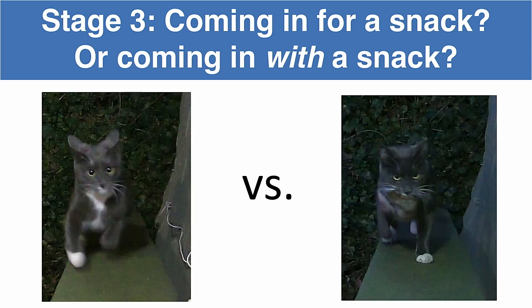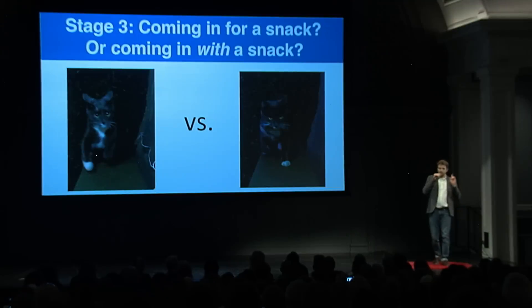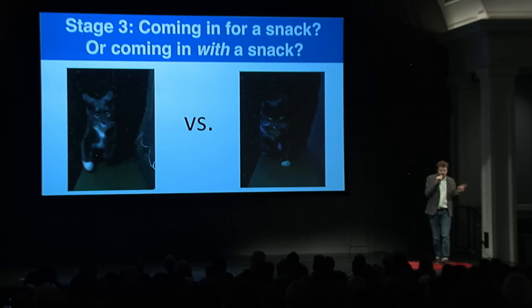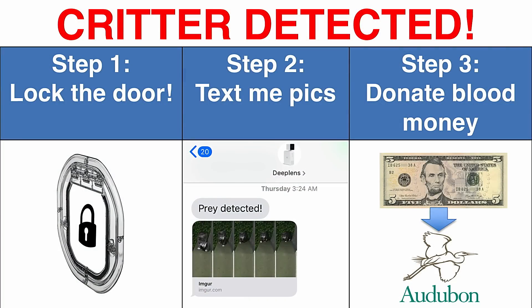If the cat is coming in with prey, three things happen. First, it locks the cat door for 15 minutes, which is long enough. Second, it texts me pics.